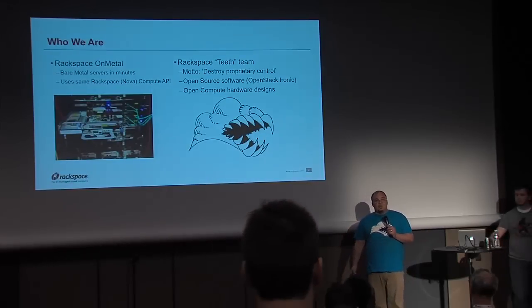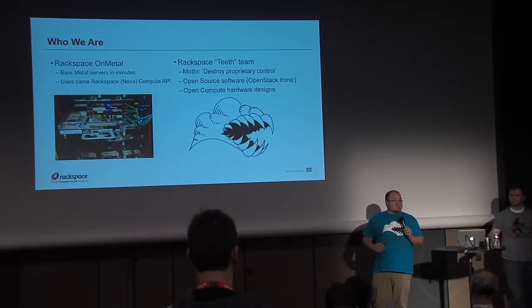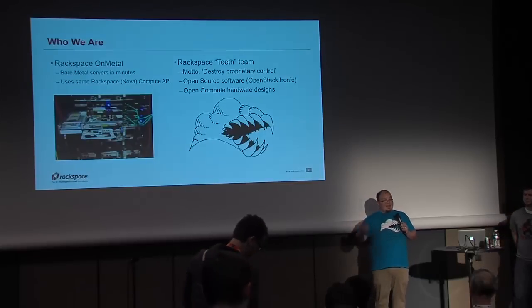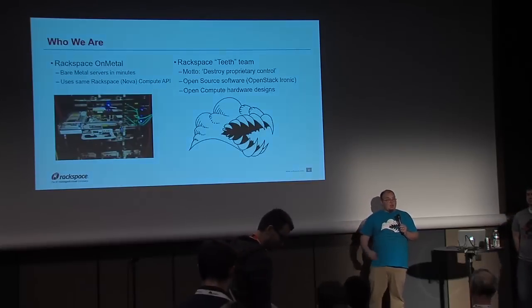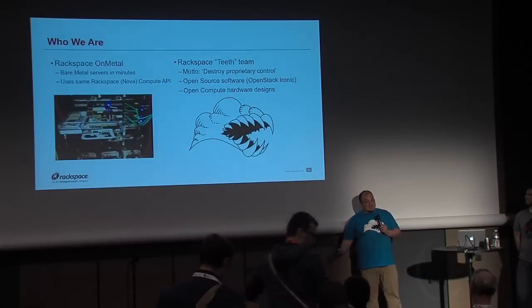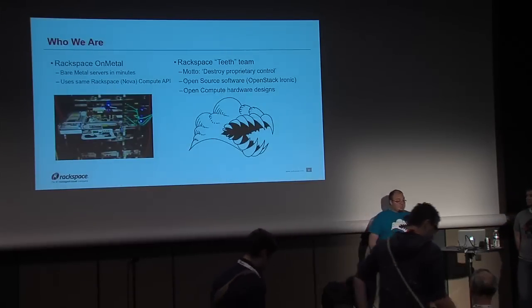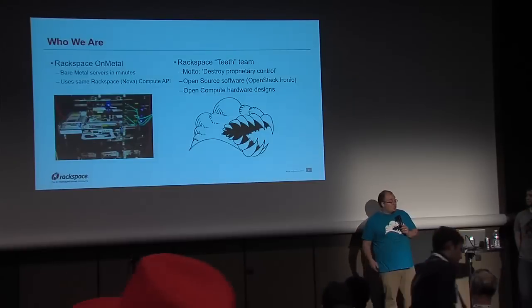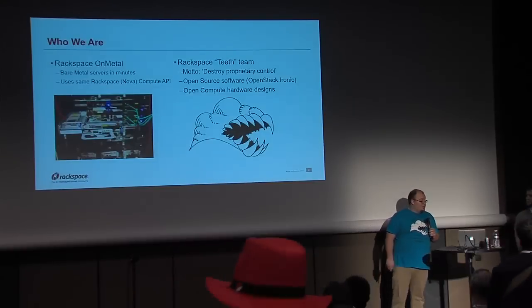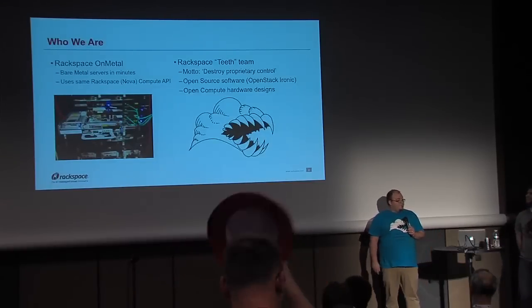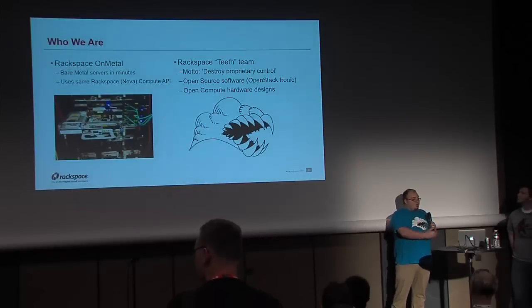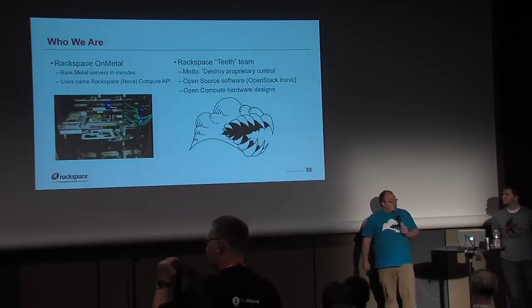Even code that we may talk about today that we're running downstream and is still in Gerrit, you can go look at it today, you can run it today. Come into the OpenStack Ironic channel and we'll help you run it. What does the Rackspace Teeth team do? Well, we built Rackspace OnMetal.